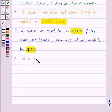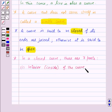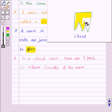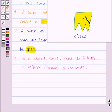In a closed curve there are three parts. First is interior or inside of the curve. So here in this closed curve, this shaded region is the interior of this curve. So we can say here this point A is in the interior of the curve.